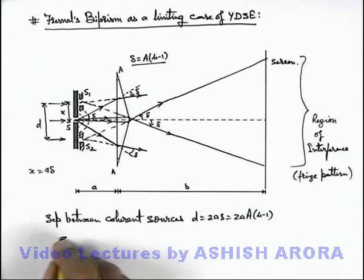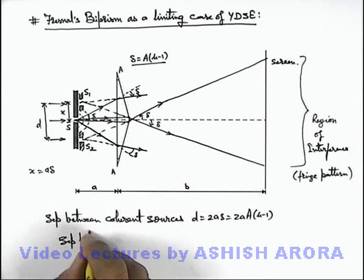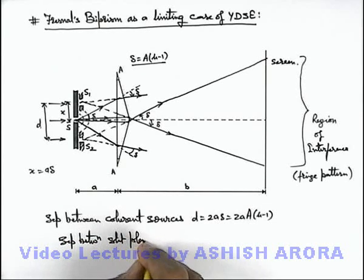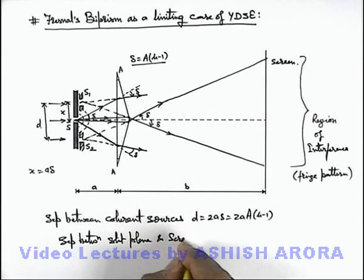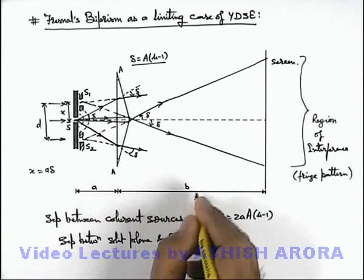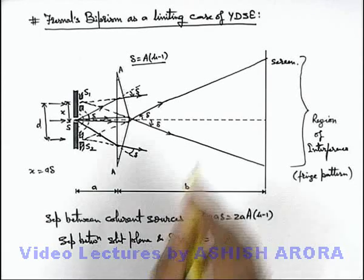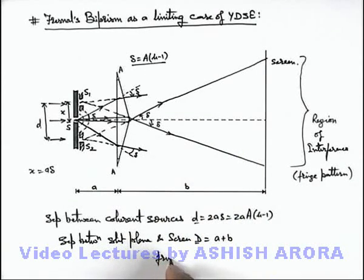In this situation, the separation between slit plane and screen, this capital D, we can write as a + b.